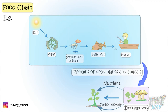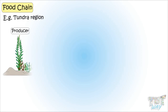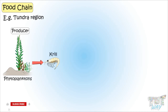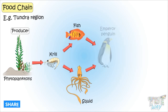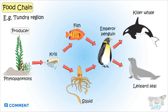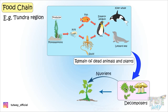Here is another food chain — it is from the tundra region. As we know, all food chains start from producers. Here too, first are very small plants called phytoplankton, which are eaten by krill. Krill is eaten by squids and fish. Squids and fish are eaten by emperor penguins. Emperor penguins are eaten by killer whales and leopard seals. And everywhere, dead remains are decomposed by decomposers and converted to nutrients for soil and carbon dioxide for air.